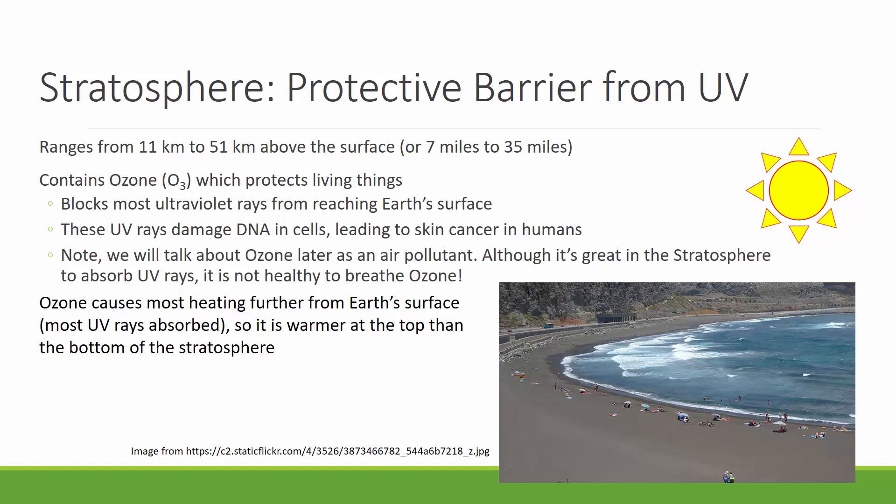When UV rays do get through, they can damage DNA in our cells, and that leads to skin cancer in humans, and it also damages other animals and even plants. Ozone is interesting because as you travel up through the stratosphere, it actually gets warmer — the ozone layer at the top is exposed to more UV energy and absorbs more heat, which then gets blocked as it passes through the stratosphere.